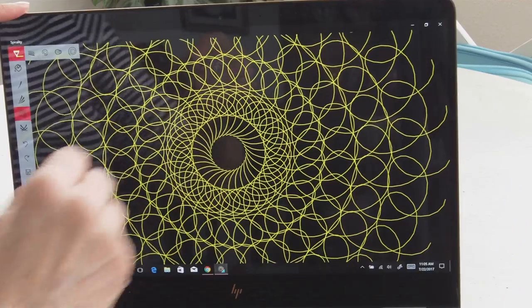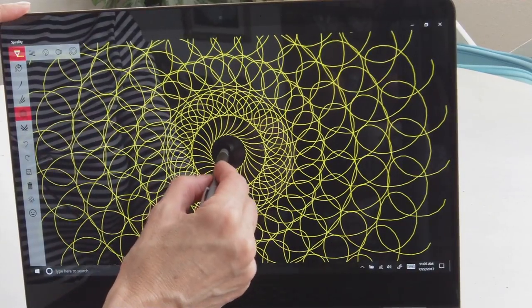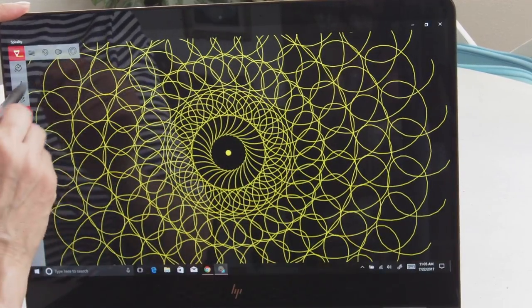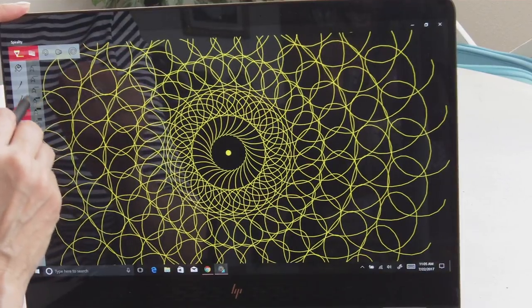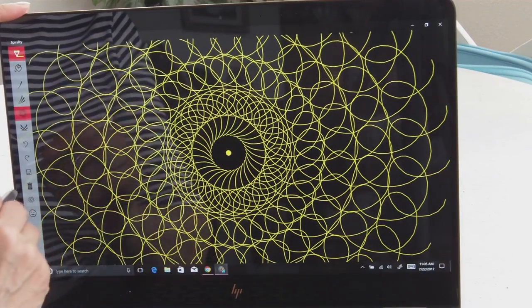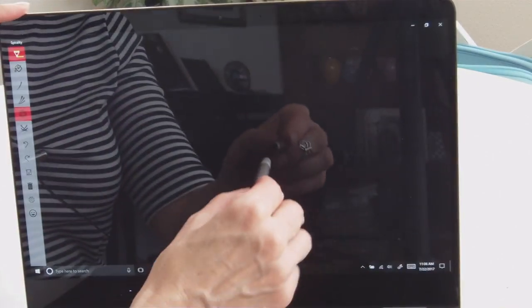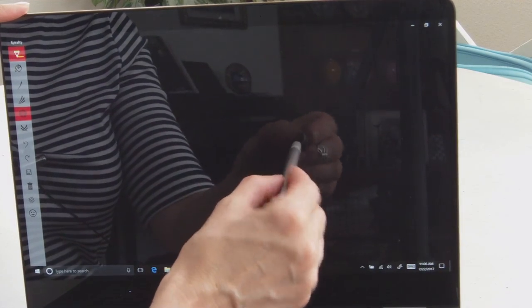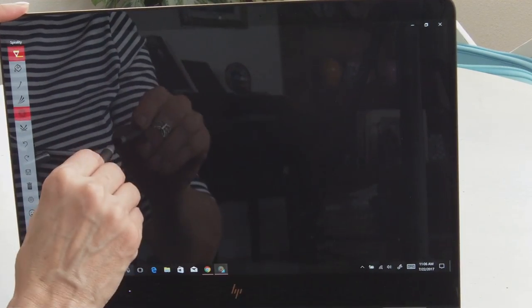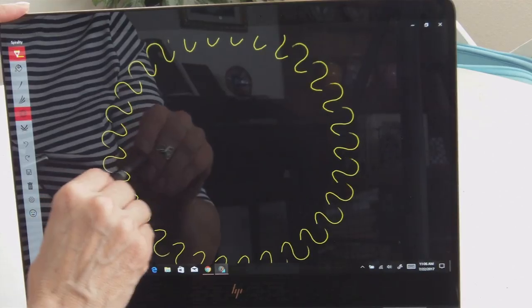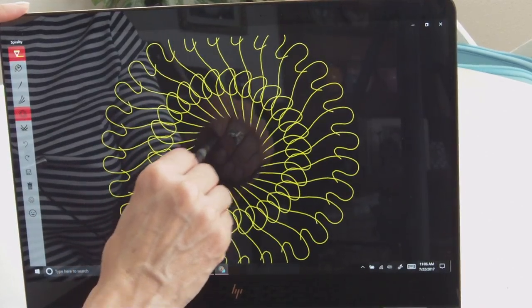So that could be really fun for making mandalas, doing a little bit of meditative art. It puts me in the zone. I don't know if it does watching, but it sure does to do it. So spirality. Let's see what happens if I start on the side. Oh, still makes the center the center, I guess.